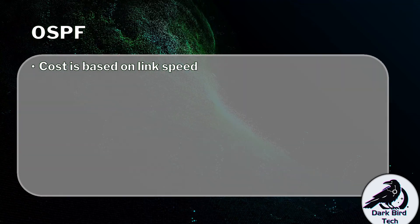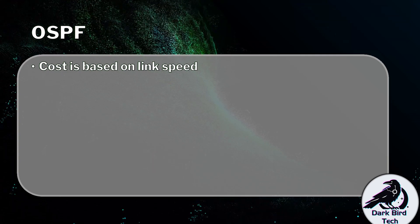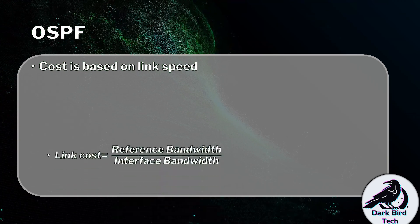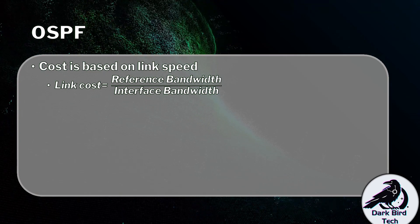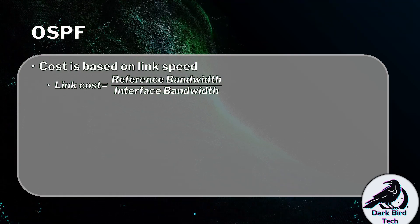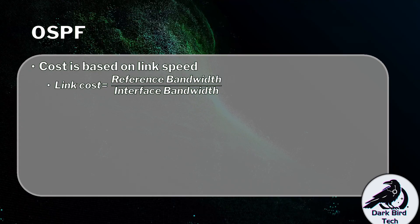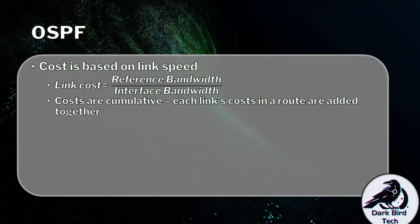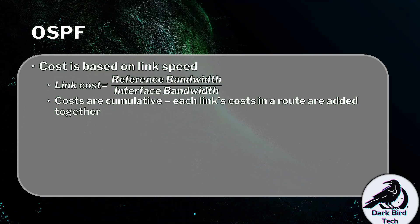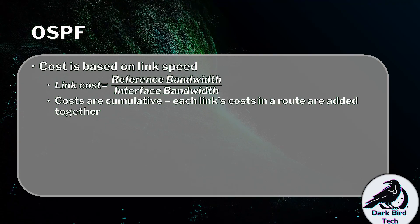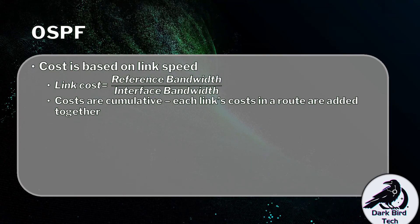With OSPF, the cost is based on link speed. Every router running OSPF looks at the speed of an interface connecting to a neighboring router to work out the link cost. Link cost equals the reference bandwidth divided by the interface bandwidth. Most vendors set the reference bandwidth to 100 megabits per second, but you can adjust it if your interfaces are faster — just do it consistently. Costs are cumulative, so routers add up the cost for every link in a path. The faster the interface, the lower the cost, and routers favor the lower cost number.